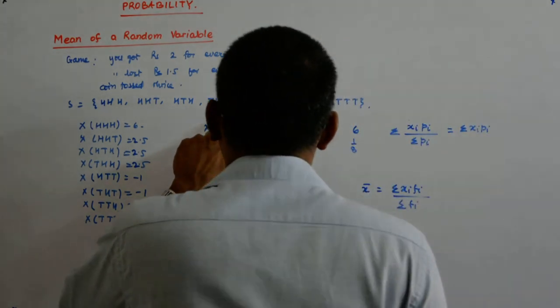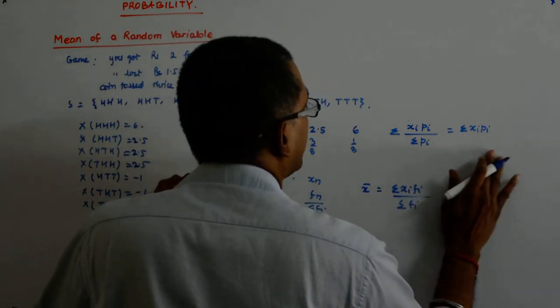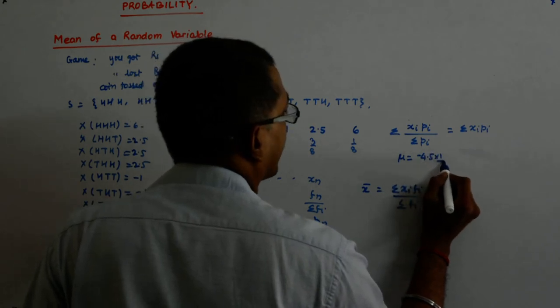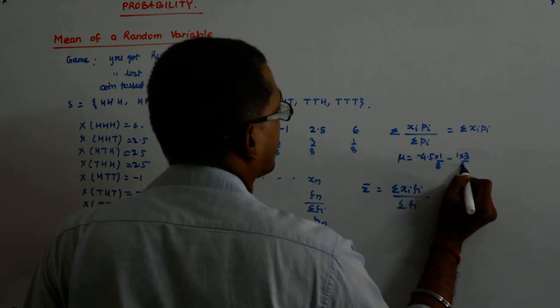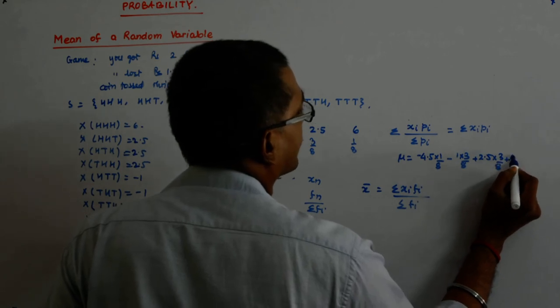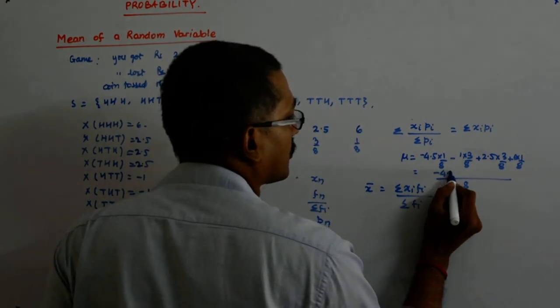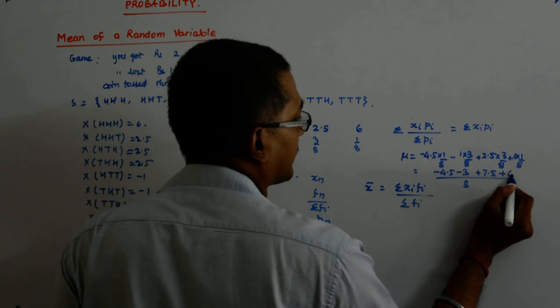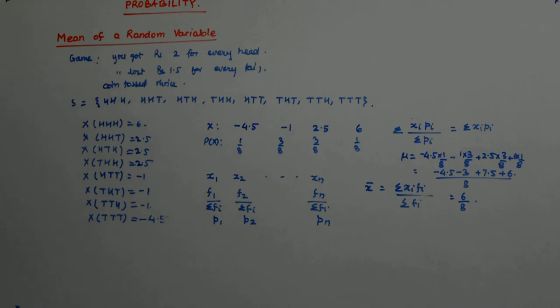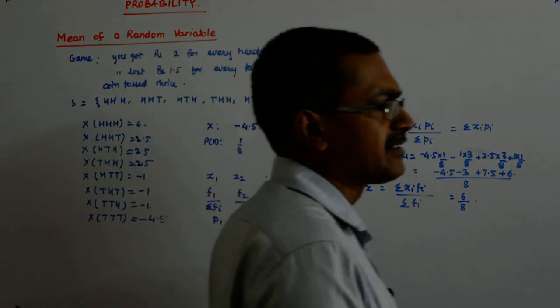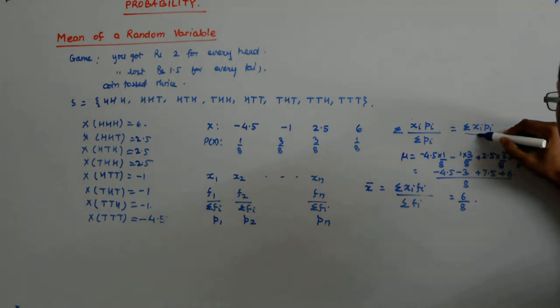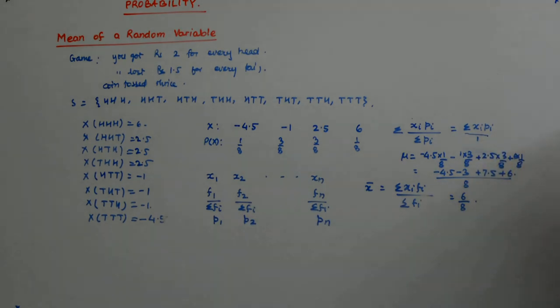Now I do exactly that. You multiply this by this. Mean denoted by mu is minus 4.5 into 1 by 8 minus 1 into 3 by 8 plus 2.5 into 3 by 8 plus 6 into 1 by 8. What do we get? 8 becomes our denominator. This is minus 4.5 minus 3 plus 7.5 plus 6. That gives me 13.5 minus 4 is 9, 9 minus 3 is 6, so 6 by 8. If you play this game on an average, summation pi is 1.